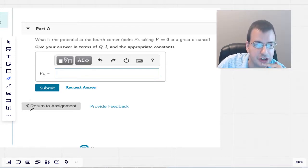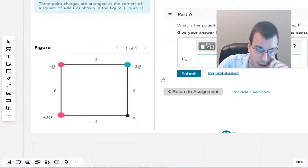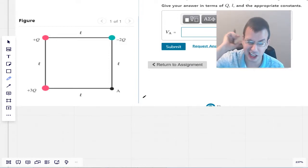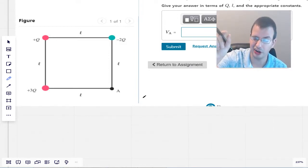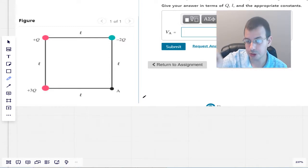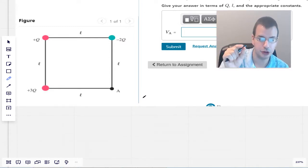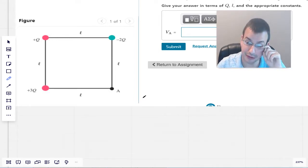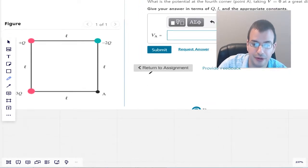Give your answer in terms of Q, L, and appropriate constants. So the definition of electric potential is the work required per unit charge to bring a test charge to a specific point in space, specifically from infinity.